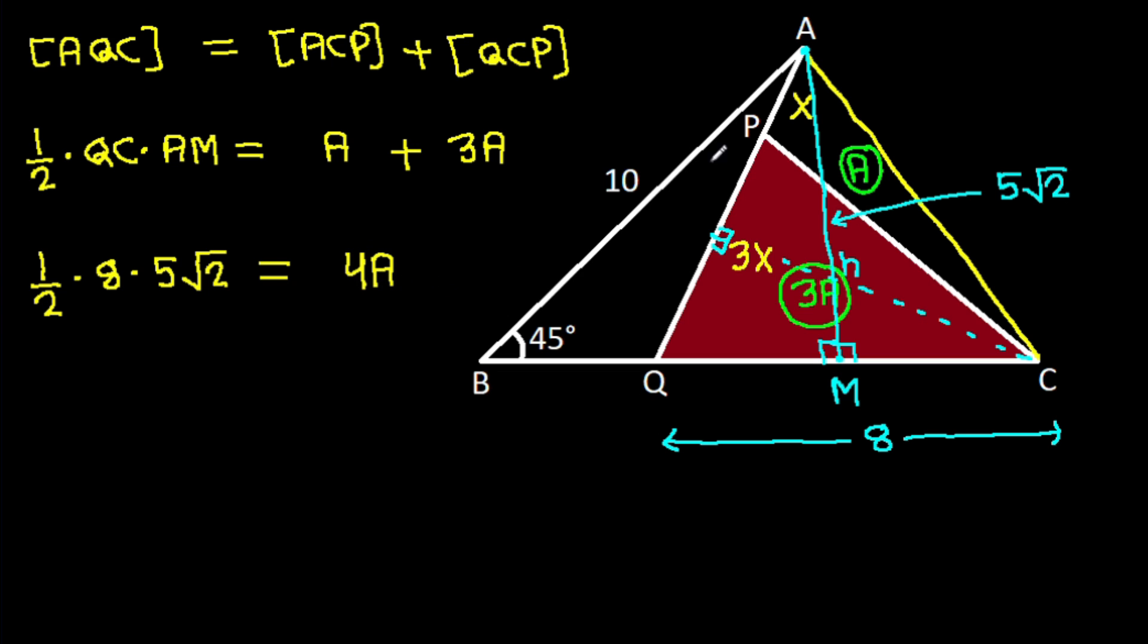So 1 over 2 times 8 times 5 root 2 equals 4A. This simplifies to 5 times root 2 equals A. So we get A is 5 times root 2.